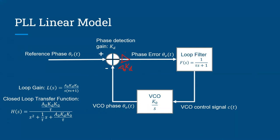If we make the linear approximation, we replace the phase detector block with a subtraction block: θ_r − θ₀ gives θ_e, multiplied by A₀K_D. The loop filter — a first-order low-pass filter F(s) = 1/(τs + 1) in the Laplace domain — removes the high-frequency component from the phase detector output, leaving only the error term. The output of the filter goes directly to the VCO control port.